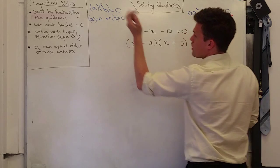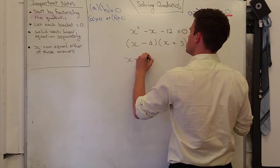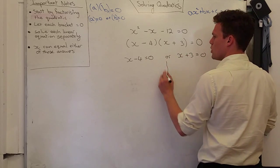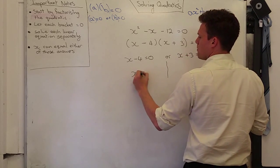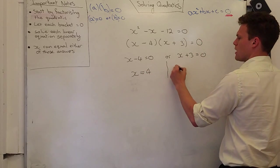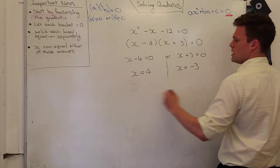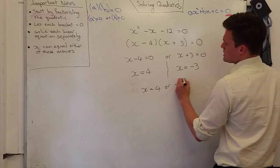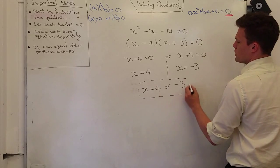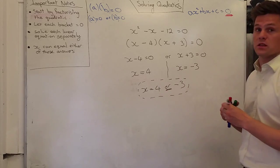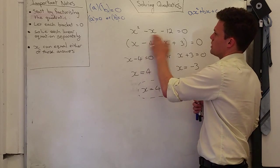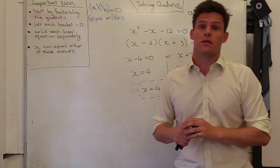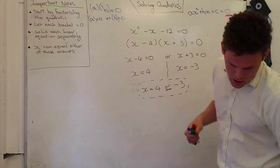And then now I can let each of these brackets equal 0. So I can say x minus 4 equals 0, or x plus 3 equals 0. And then I just solve these linear equations very easily. x equals 4, or minus 3. You must have this statement here to show that you understand it can be either of these solutions. And you can check yourself by substituting them back in here, and you'll then get out 0 if you substitute in either of them. Okay, last one.